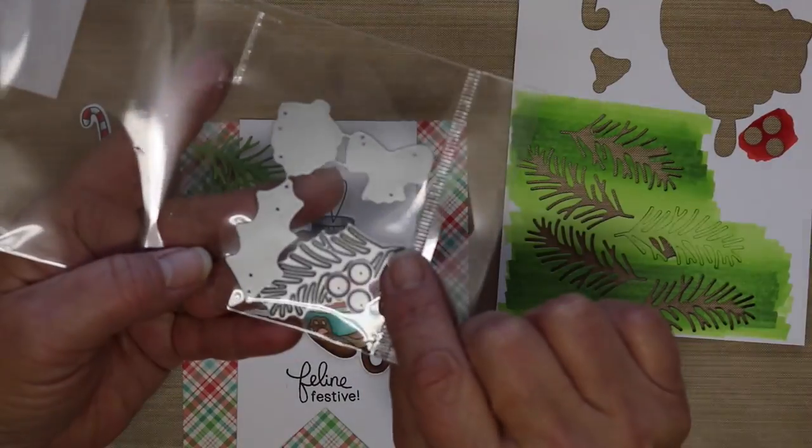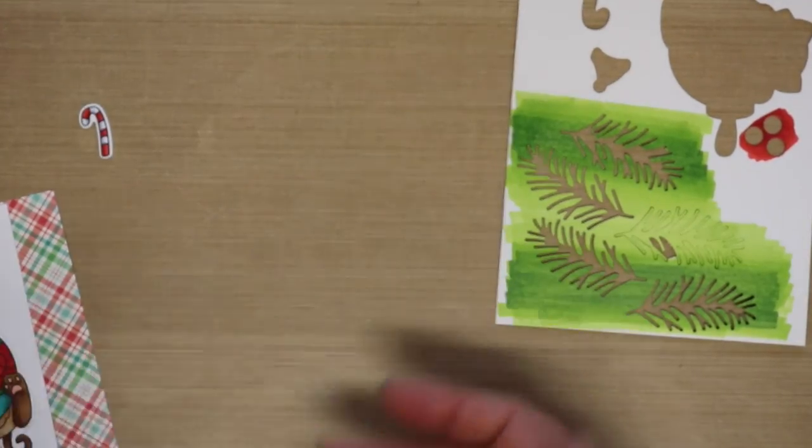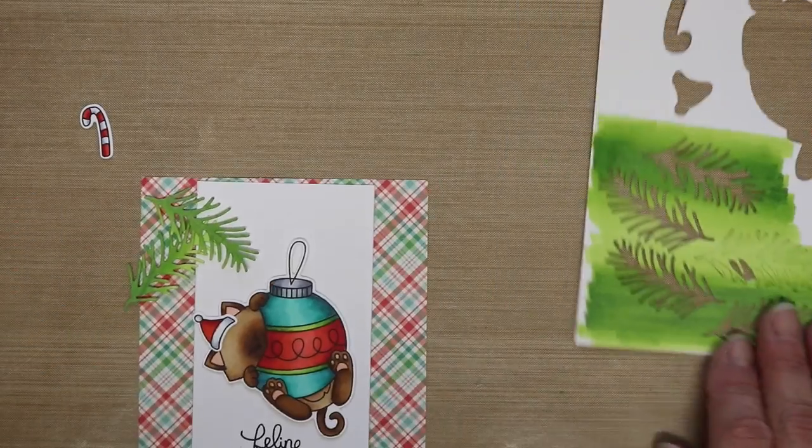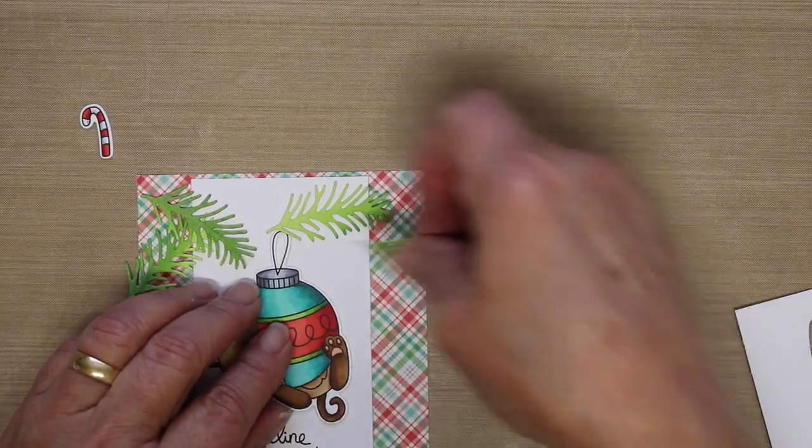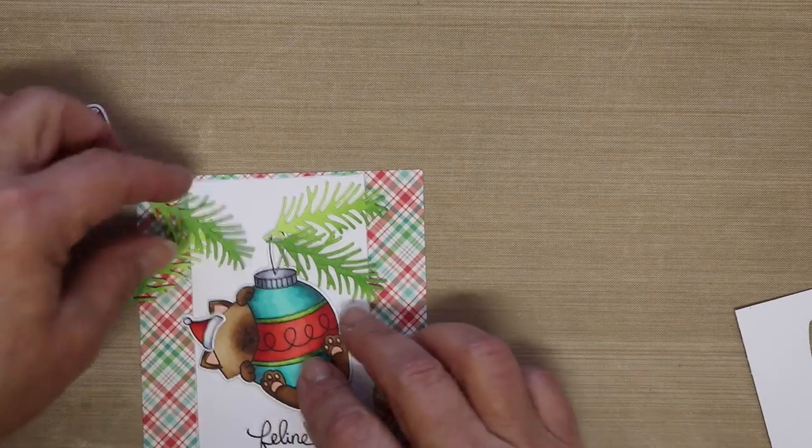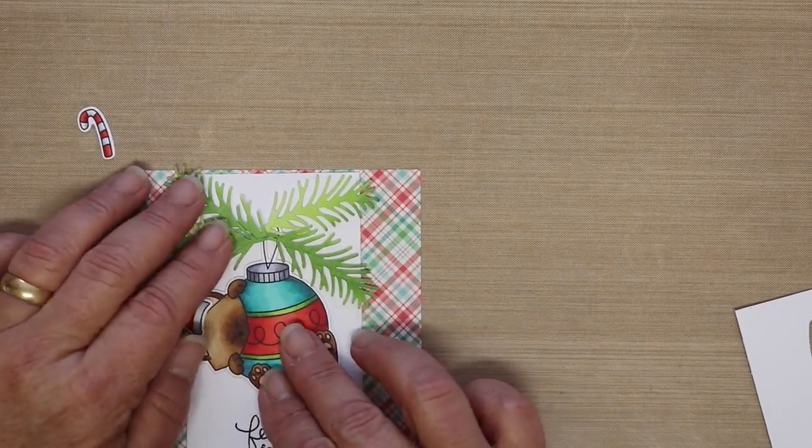And here you can see that I have also colored a scrap piece of paper. And I am using the Newton's Nook Pine and Holly Die to cut out some of the little pine boughs here and some of the berries.